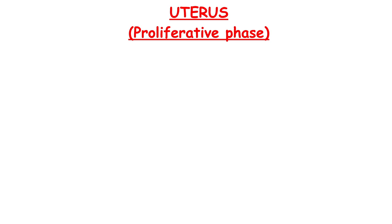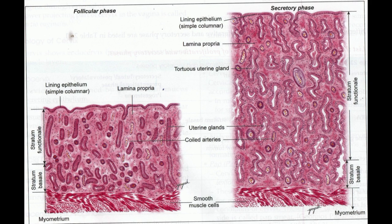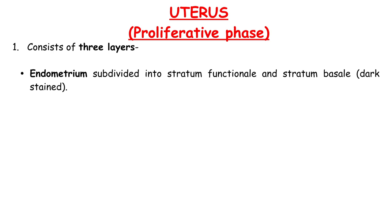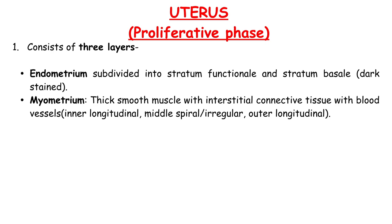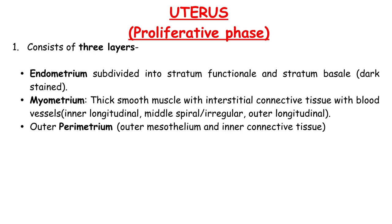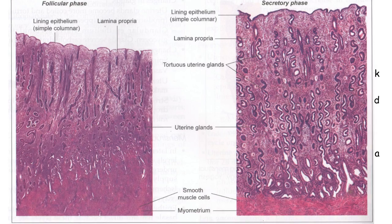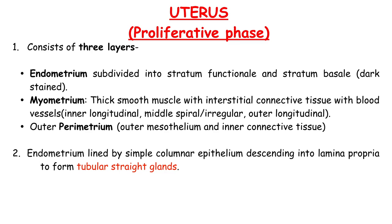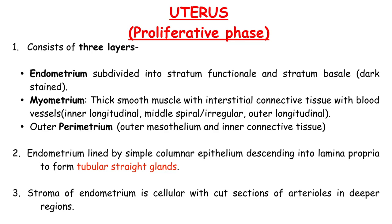Uterus proliferative phase consists of three layers. Endometrium is subdivided into stratum functionale and stratum basale, which is dark stained. Myometrium contains thick smooth muscle with interstitial connective tissue with blood vessels. It consists of inner longitudinal, middle spiral or irregular, and outer longitudinal layer. Outer perimetrium consists of outer mesothelium and inner connective tissue layer. Endometrium is lined by simple columnar epithelium descending into lamina propria to form tubular straight glands. Stroma of endometrium is cellular with cut sections of arterioles in deeper regions.